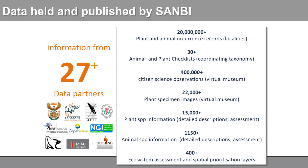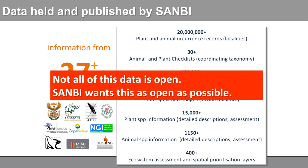There's a mountain to climb before we even get to that. The kind of data that we currently hold — records, checklists, specimen images, et cetera — is quite a significant repository. But that's not SANBI's data. That data comes from data partners. There are 29 big ones, but literally hundreds of data partners, down to someone from a farm who sends us his checklist of what's on his property.